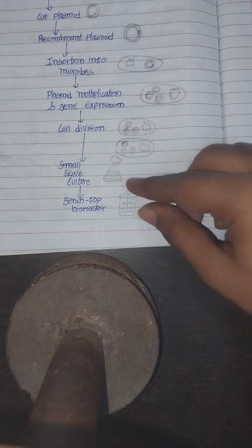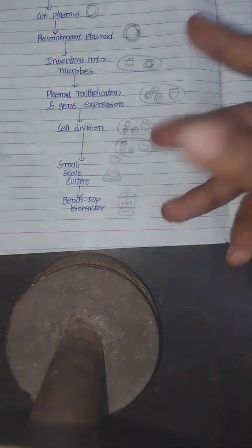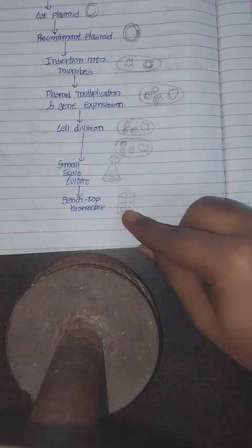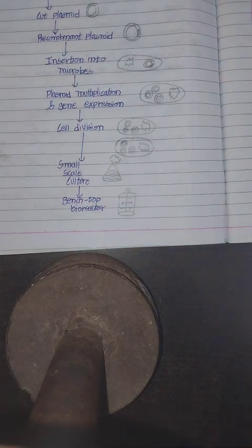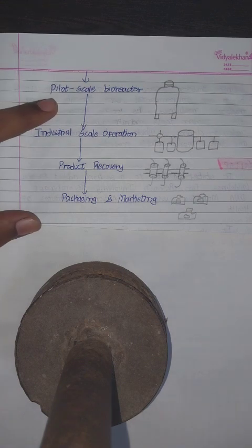Bioreactors are large vessels which are used to increase the production and maintain its processivity. Bench-top bioreactor is used in this process. After that, it is introduced into pilot scale bioreactors.